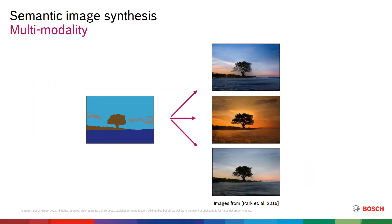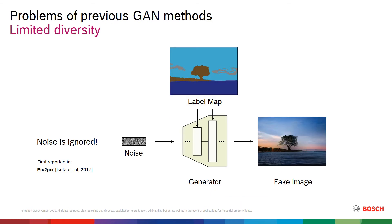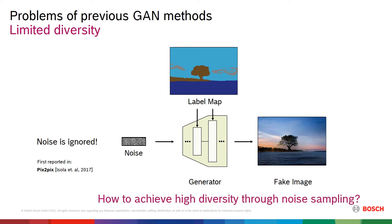A desirable property of a model for semantic image synthesis is multi-modality. That means the generator should be able to produce diverse images from a single label map. Previous work observed that feeding a noise vector to the generator leads to reduced diversity, as the networks tend to ignore the noise. To this end, we introduce a novel 3D noise sampling scheme that achieves improved diversity and provides fine-grained control over the generation process.